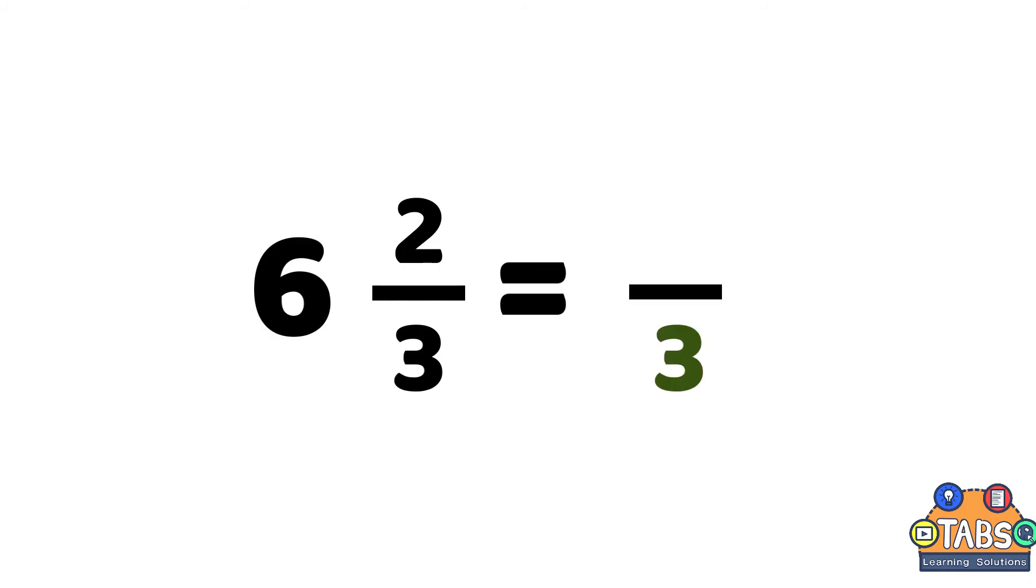Let's take another example: 6 2/3. We need to copy the denominator of 3. Put a multiplication sign at the bottom and an addition sign at the top.